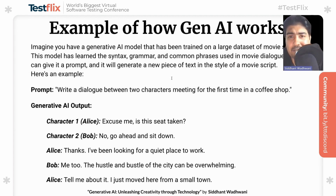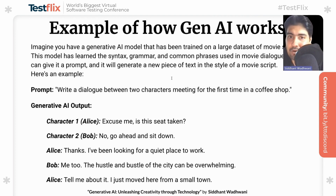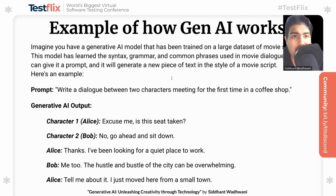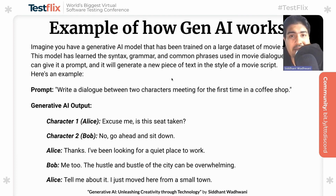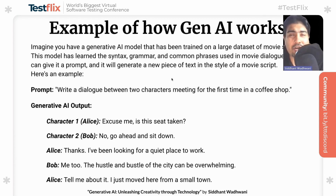The model understood the structure of a typical movie dialogue scene, including character introductions, polite exchanges, and background information. Generative AI works by using mathematical algorithms, neural networks, and deep learning techniques to analyze and generate content. It breaks down the input data into smaller pieces — such as words or phrases — and then predicts the next piece based on patterns learned during training. This process continues iteratively until the AI generates a complete piece of content. The quality of the output can vary depending on the size of the training dataset, the complexity of the model, and the accuracy of the prompts given.